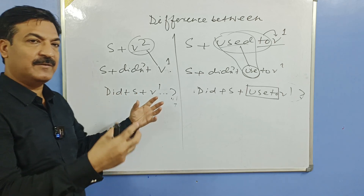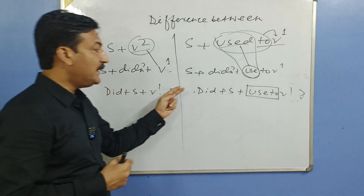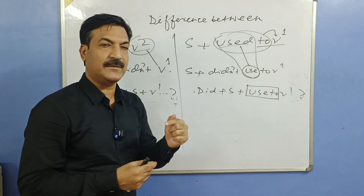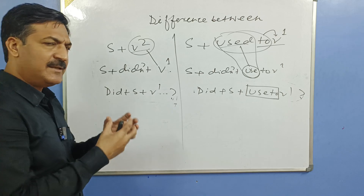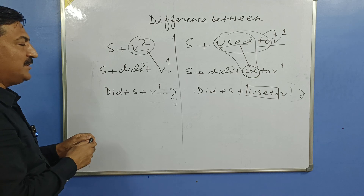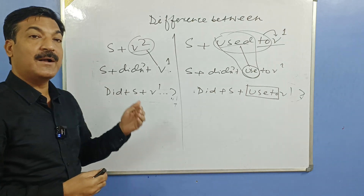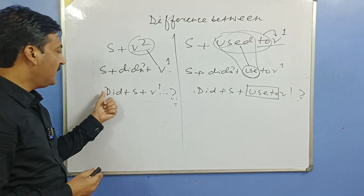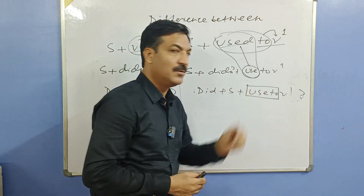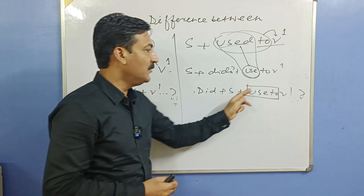Bolne mein aap yahi use karein jahan helping verb hai, wahin pe negative lagayein. Toh 'kya tum nahi gaye the' — didn't you go. 'Kya tum nahi jaate the' — didn't you use to go. Aur aapko pata hai question ek tarah ka aur hota hai — WH. Jaise hi WH question hoga, structure wahi rahega, sirf iske pehle WH aa jaayega. Jaise: 'kya tum gaye the' — did you go? 'Tum kahan gaye the' — where did you go? 'Kya tum jaate the' — did you use to go? 'Tum kahan jaate the' — where did you use to go?